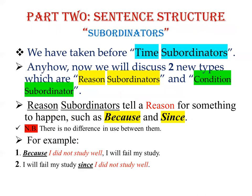We have already covered time subordinators such as 'when,' 'while,' 'before,' 'after.' Now we will discuss two new types: reason subordinators and the condition subordinator. Reason subordinators — 'because' and 'since' — tell a reason for something to happen.